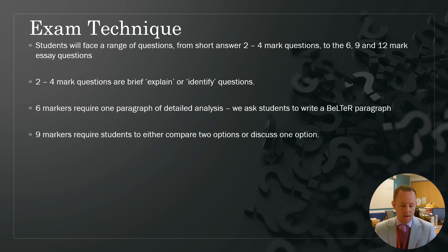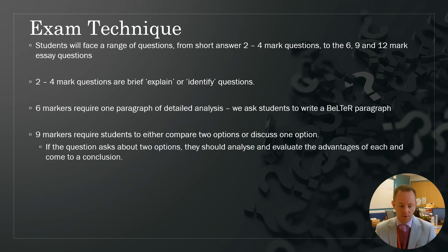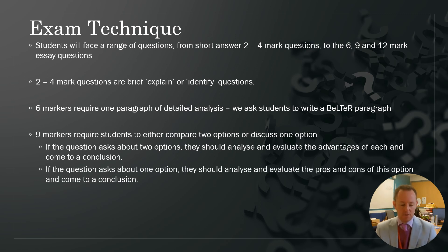A nine-mark question will require students to either compare two potential options or discuss one option. If the question asks about two options, they should always analyse and evaluate the advantages of both and then come to a conclusion. If the question asks about just one potential option, they should analyse and evaluate both the positives and the negatives of that option, and again come to a conclusion about which they believe is more important.